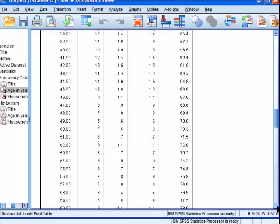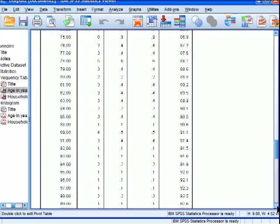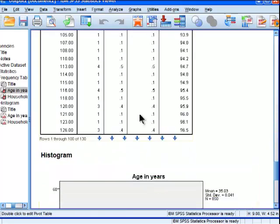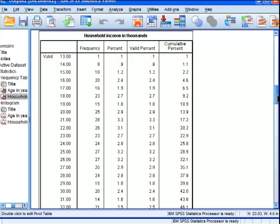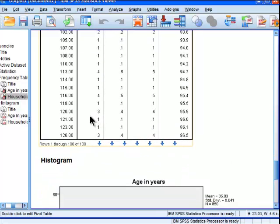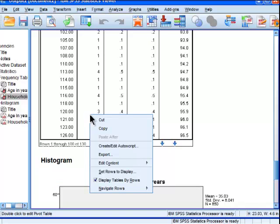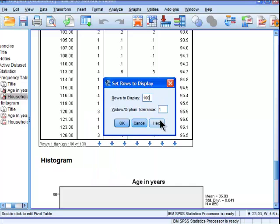But one interesting thing about this is that the table actually cuts out at 100 rows. SPSS does this by default. So you have to right-click the table, and then set rows to display, and change that to 130 so that we can see everyone.